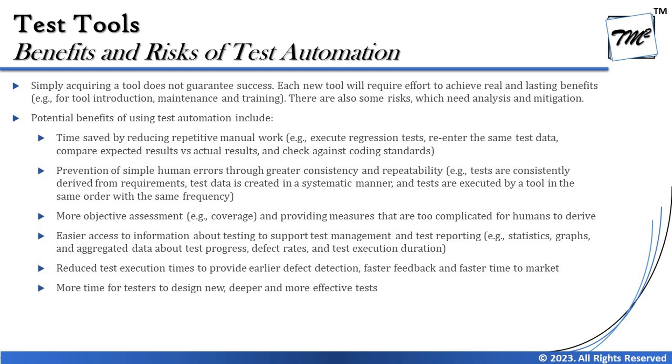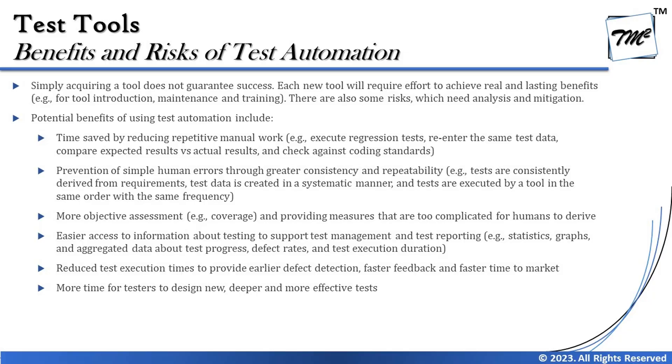Finally, we also talk about reduced test execution time to provide earlier defect detection, faster feedback, and faster time to market. As an automation testing tool user, you understand that it is simpler and faster when automation tools are in practice, because most of your manual efforts can be reduced. Additionally, more time is given to testers to design new, deeper, and more effective tests — rather than wasting their time doing executions manually. Put together, there are several benefits of having tools used in the organization.